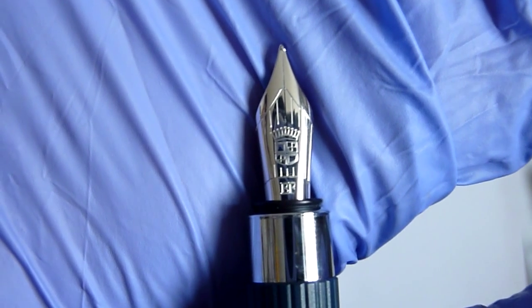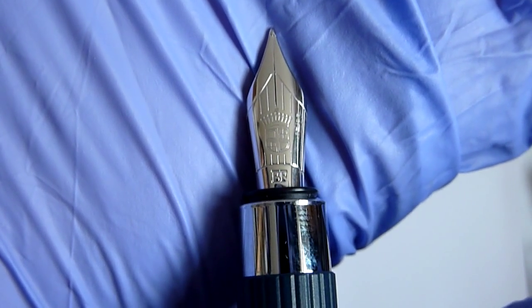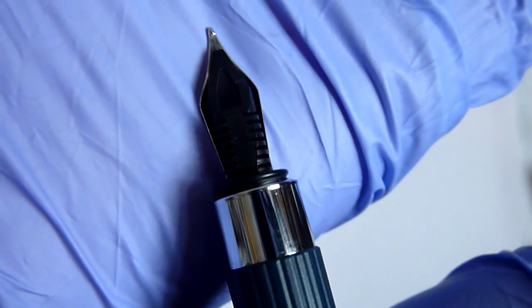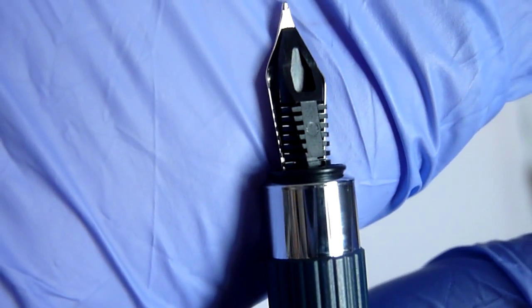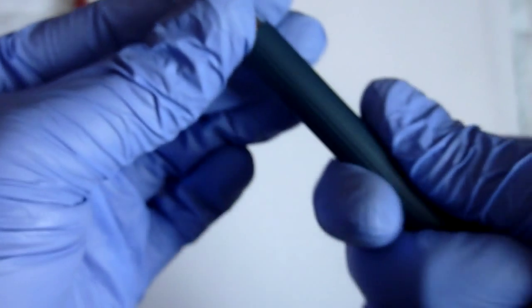The nib then is an extra fine nib as I mentioned. This one actually says EF at the bottom which is extra fine. It's not a gold plated nib but I think it's a rhodium plated nib whereas the Montblanc ones are gold plated nibs.